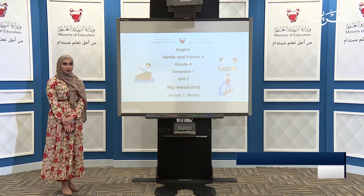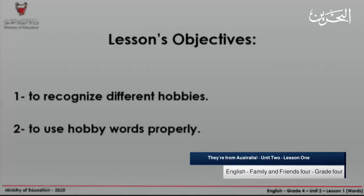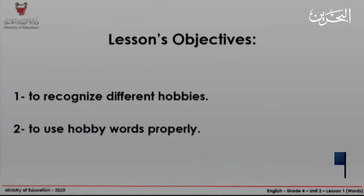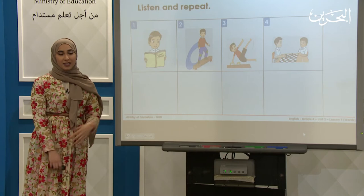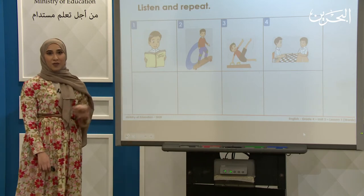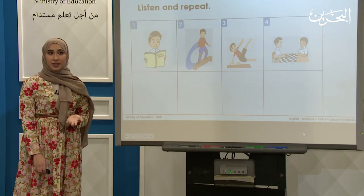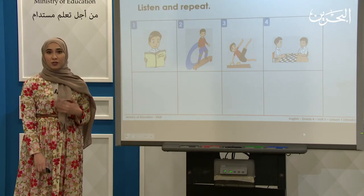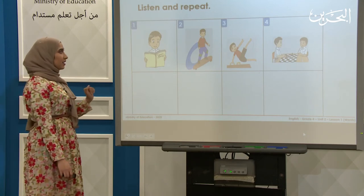And a pencil. Here are our lesson objectives. By the end of today's lesson, you are going to be able to recognize different hobbies, and you are going to be able to use hobby words properly. Now let's look at the hobbies. I am going to tell you the words and I want you to repeat after me.